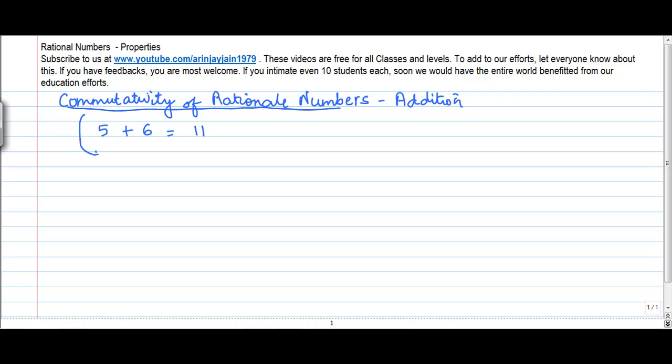By commutativity what I mean is that if I change the order of addition, does the result change? So instead of 5 plus 6, if I do 6 plus 5, that is equal to 11.